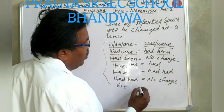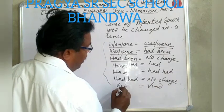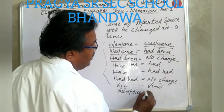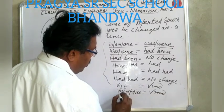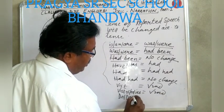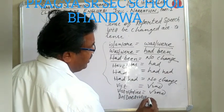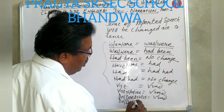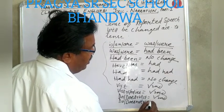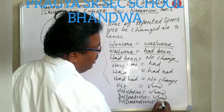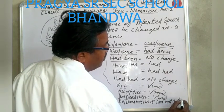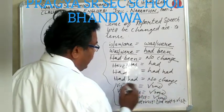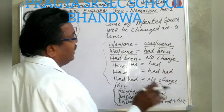First form of verb will change into second form of verb. First form of verb plus S, ES, or IES will be changed into second form of verb. Do/does plus first form of verb will be changed into did plus first form of verb. Do not/does not plus first form of verb will be changed into did not plus first form of verb. This means present indefinite will be changed into past indefinite.